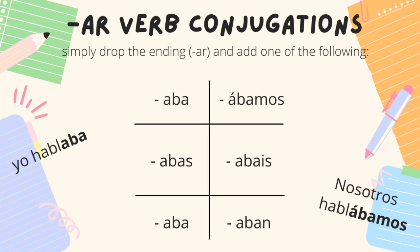Now, we already know how to conjugate verbs, but there is a difference between AR verbs and ER and IR verbs. Here is our conjugation chart for the AR verbs in the imperfect tense. You simply drop the ending, which is AR, and add the following.